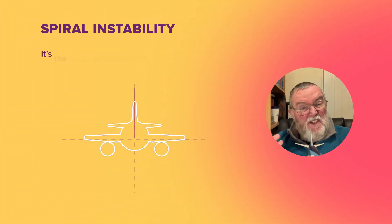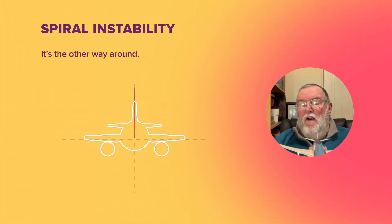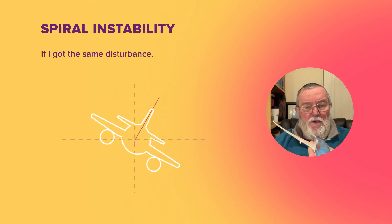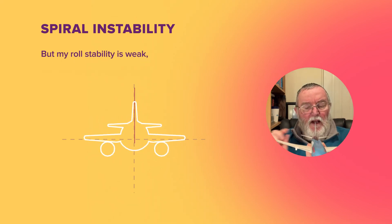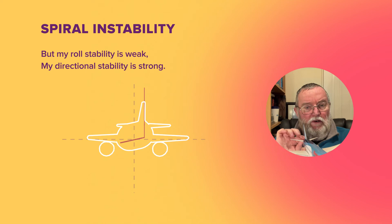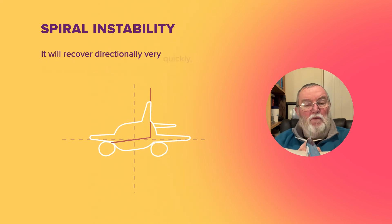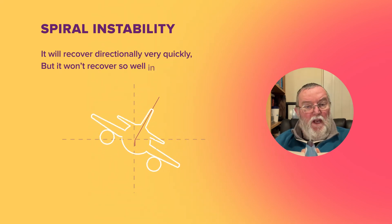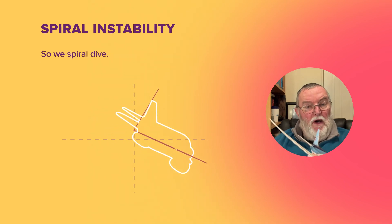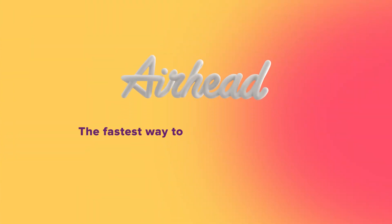Now what about spiral instability? Well it's the other way around. If I've got the same disturbance but my roll stability is weak and my directional stability is strong, it will recover directionally very quickly but it won't recover so well in roll, so we spiral dive. Easy as that. See you again soon.